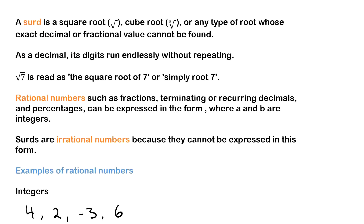A surd is a square root, cube root, or any type of root whose exact decimal or fractional value cannot be found. As a decimal, its digits run endlessly without repeating — if you put a surd into a calculator, it'll keep going until the calculator runs out of space. Root seven is read as the square root of seven, or simply root seven, and this is a surd. Rational numbers include fractions, terminating or recurring decimals, and percentages — these can all be expressed in the form a over b where a and b are integers. Surds are irrational numbers because they cannot be expressed in this form.